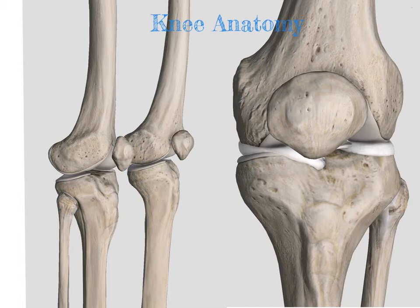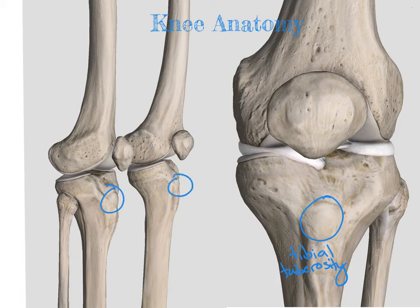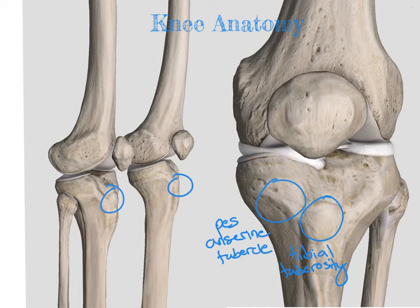The processes on the front of the tibia include our tibial tuberosity, which is where our hamstring group attaches. You can also see it here. On the medial side, this area is called our pes anserine tubercle, and the lateral side is called Gerdy's tubercle. Here we can see our pes anserine tubercle, and here we can see Gerdy's tubercle.